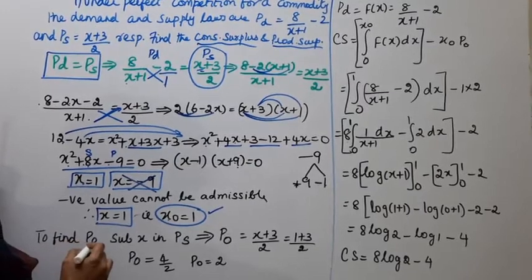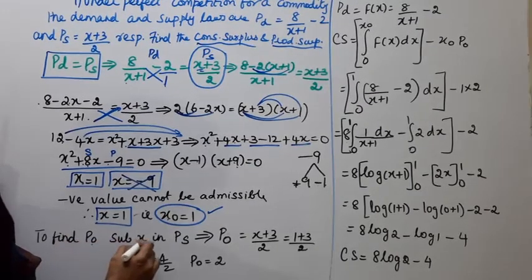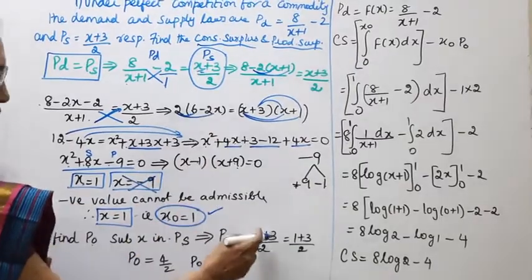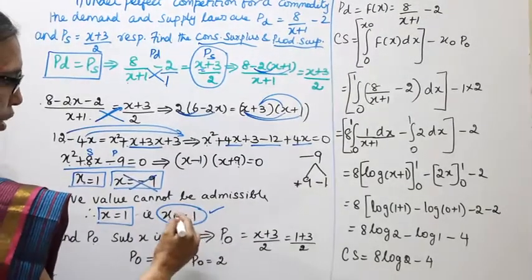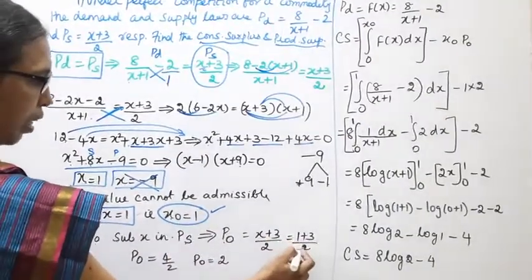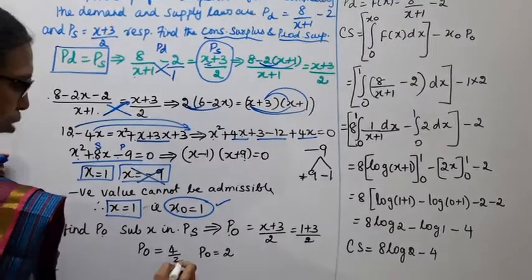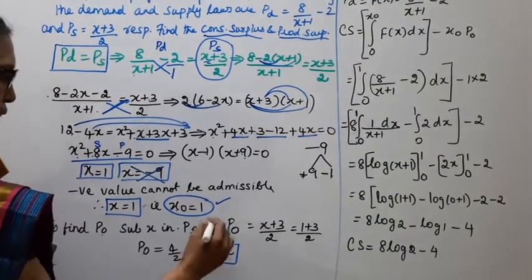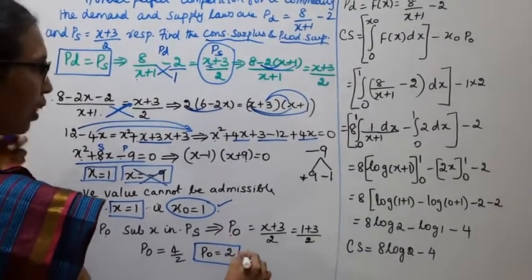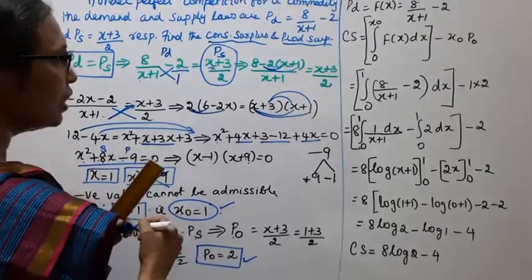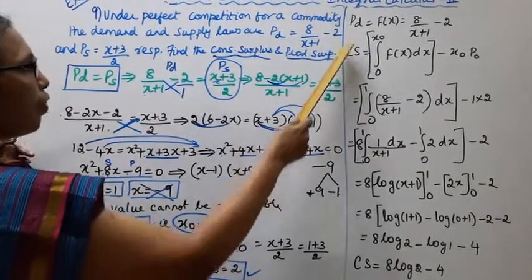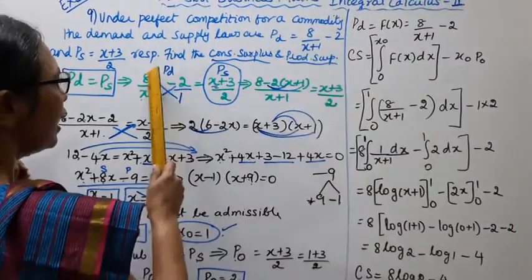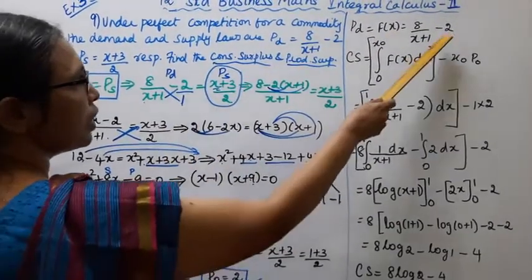To find P0, substitute x equal to 1 in the supply function: P0 equal to (x plus 3) by 2 equal to (1 plus 3) by 2 equal to 4 by 2. Therefore P0 equal to 2. So x0 equal to 1 and P0 equal to 2.